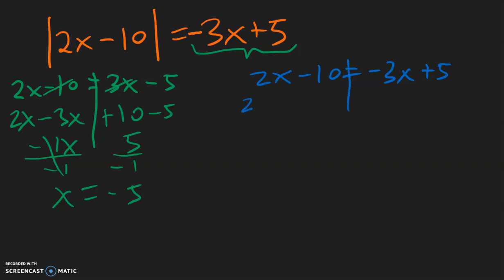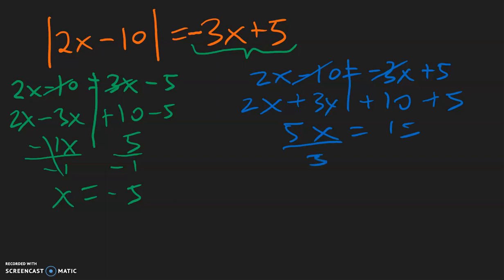So we get x equal to 5 divided by negative 1, which is negative 5. Now doing the same for the blue equation: the 2x stays here, this negative 3x needs to come over here as positive 3x. This negative 10 needs to go over to the right side — becomes positive 10 — and this 5 is already in the correct place. So 2x plus 3x is 5x, 10 plus 5 is equal to 15, dividing both sides by 5, and we get x is equal to positive 5.